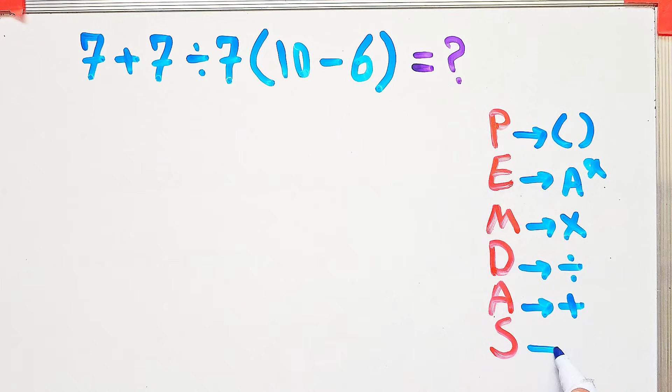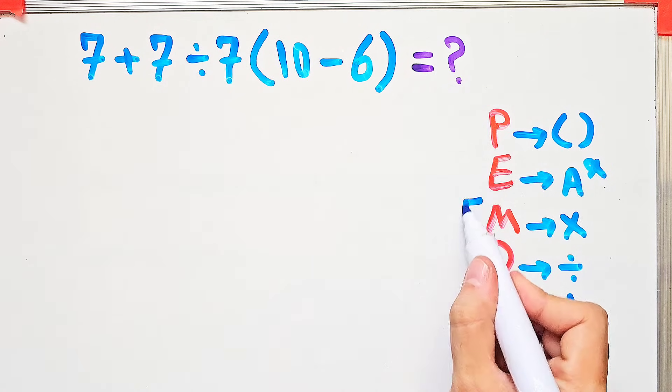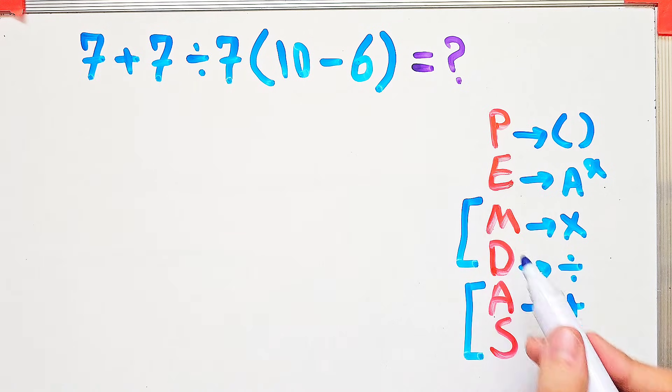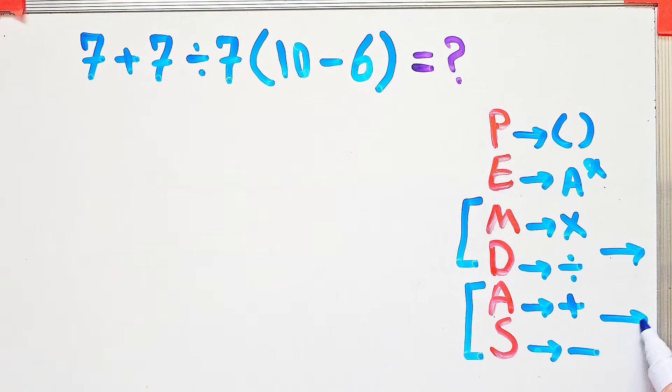Remember that multiplication and division have the same level of priority. Also addition and subtraction have the same priority. When we have both in an expression, we start from the left and simplify.